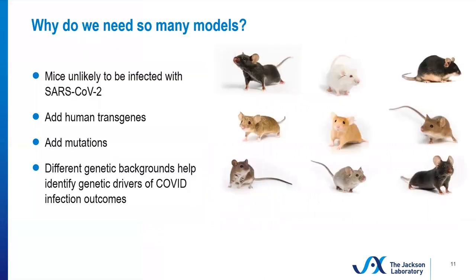So why do we need so many models? Well, mice are unlikely to be naturally infected with SARS-CoV-2. Another reason is the ability to add human transgenes. We can add other mutations and take a look at different genetic backgrounds of the mice to help identify genetic drivers of COVID infection outcomes.